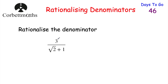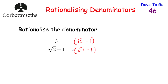Our next question says: rationalize the denominator of 3 over root 2 plus 1. This fraction is more complicated because on the denominator we've got root 2 plus 1. To rationalize a denominator like this, we need to multiply both the numerator and the denominator by the conjugate of the denominator. That means we take the denominator — root 2 plus 1 — and change the sign, giving root 2 minus 1. If there's a plus sign we make it minus; if there's a minus we make it plus.